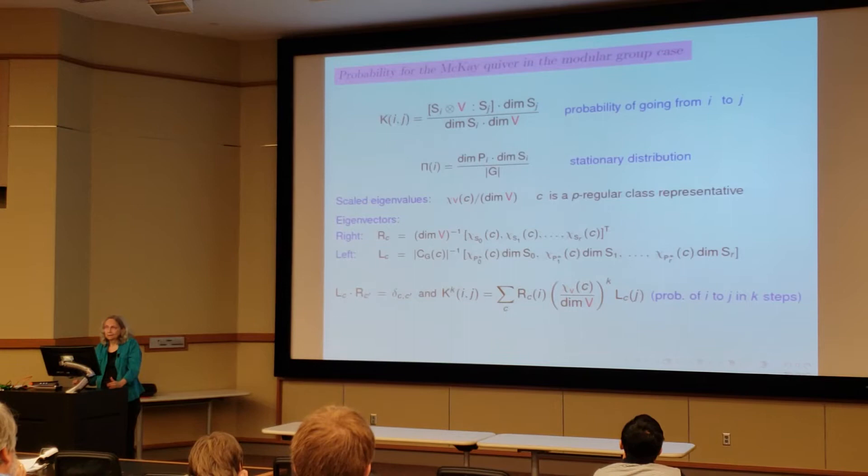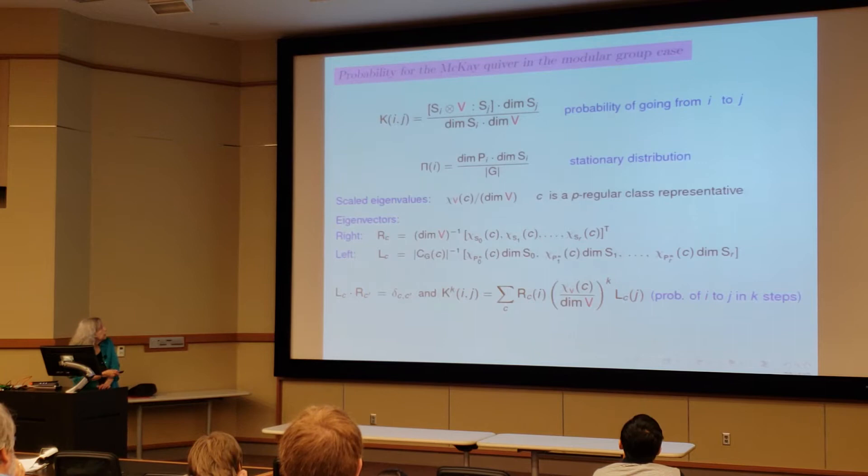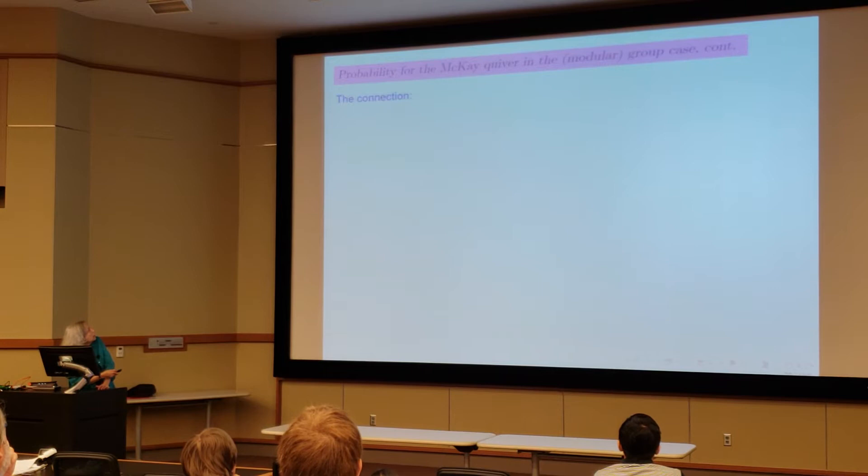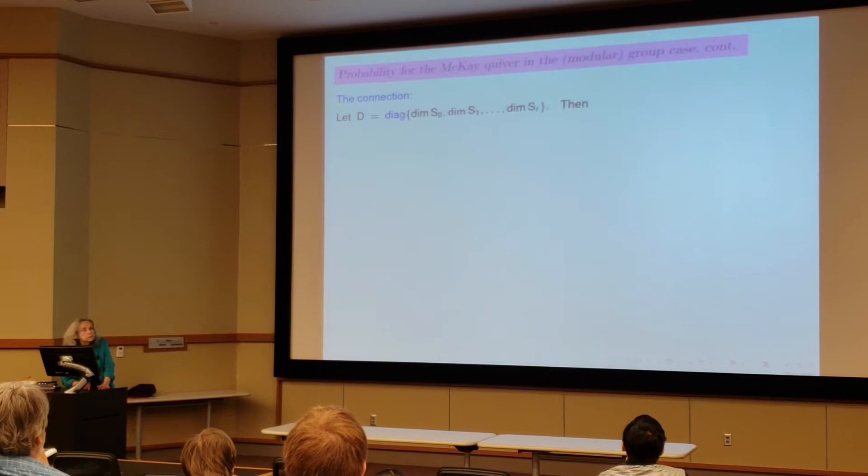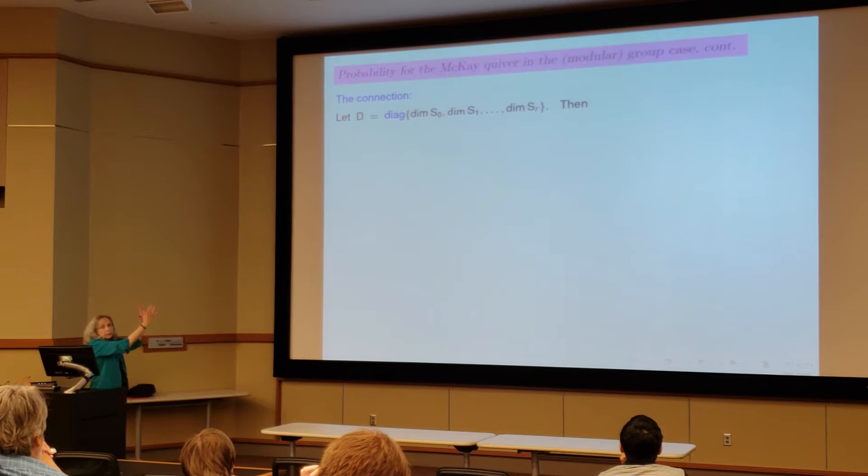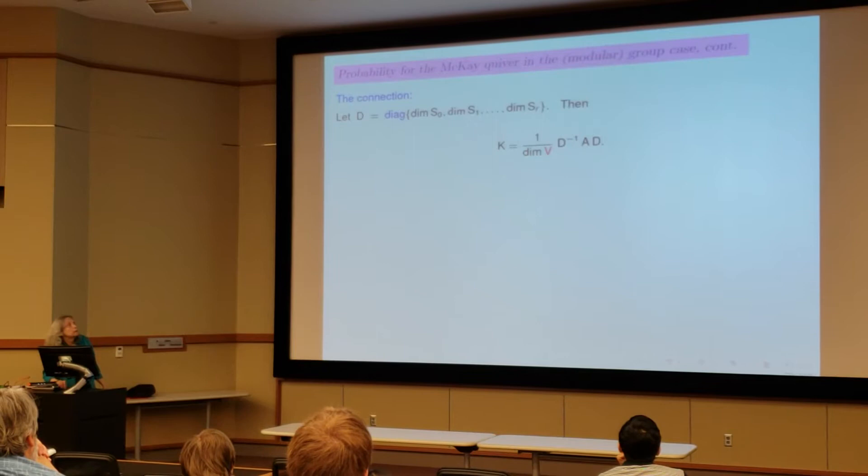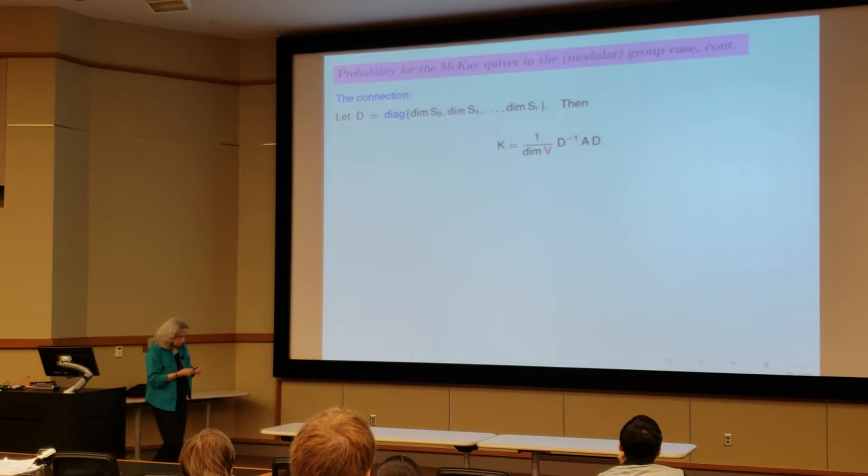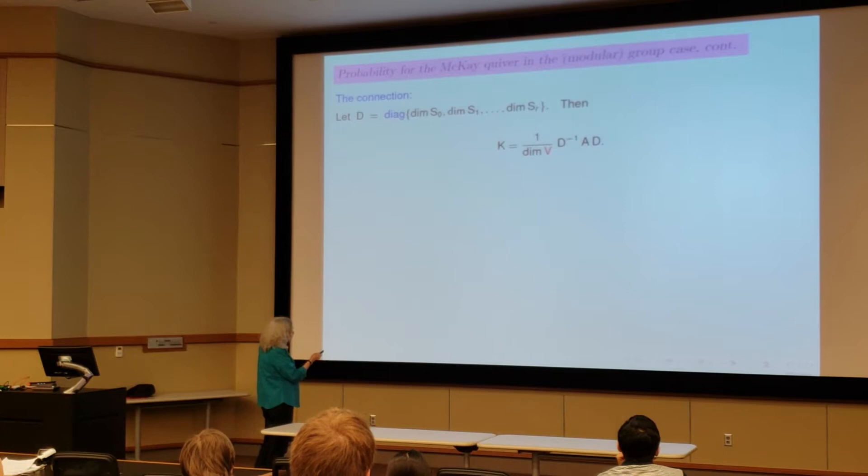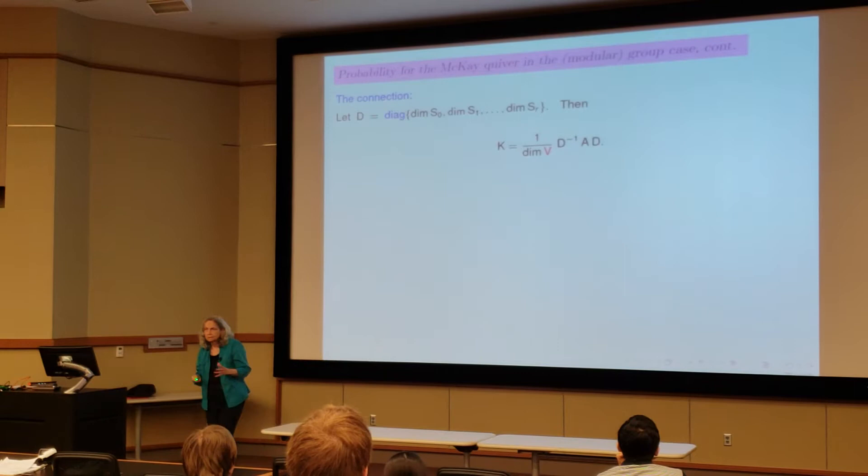For A to the K in IJN, and here's the connection. Suppose we take a diagonal matrix, so R plus 1 by R plus 1 diagonal matrix with the dimensions of the symbols on the diagonal. Then that probability matrix here is nothing but a conjugate of A.